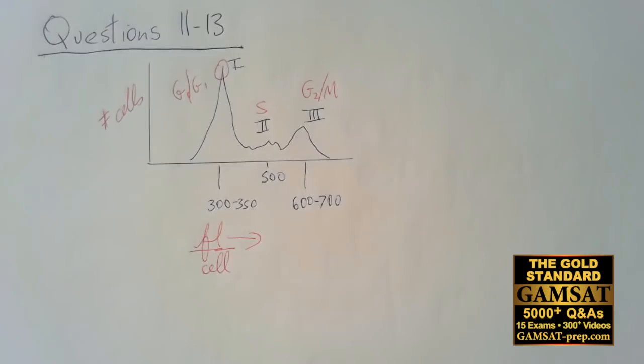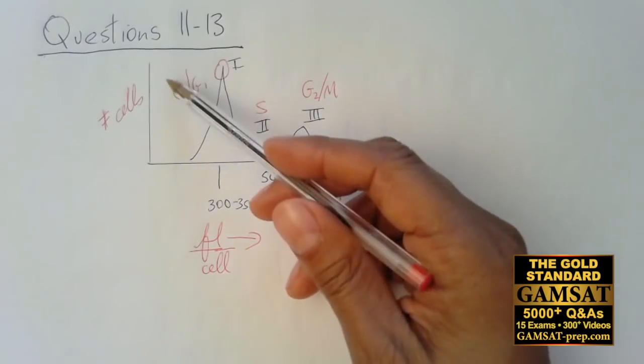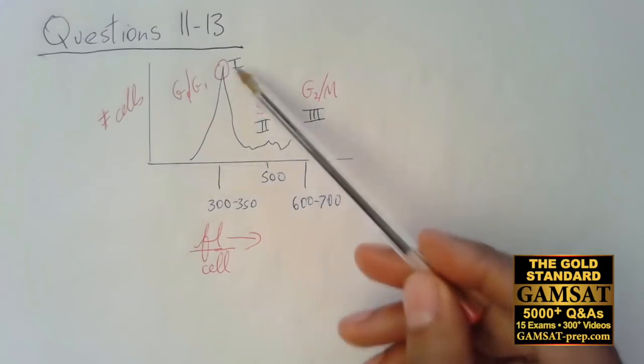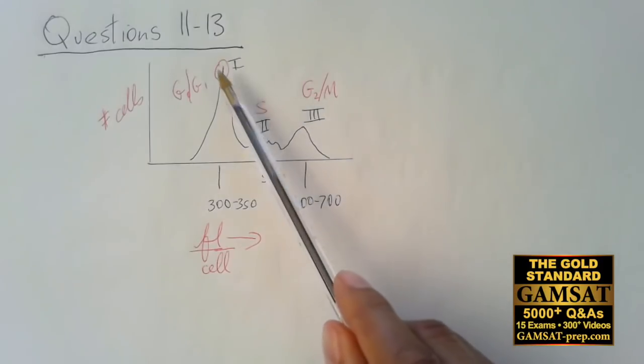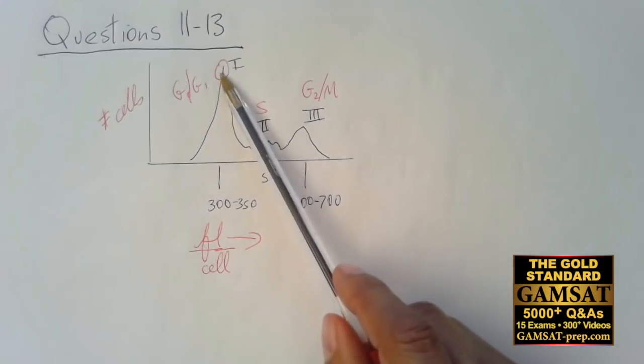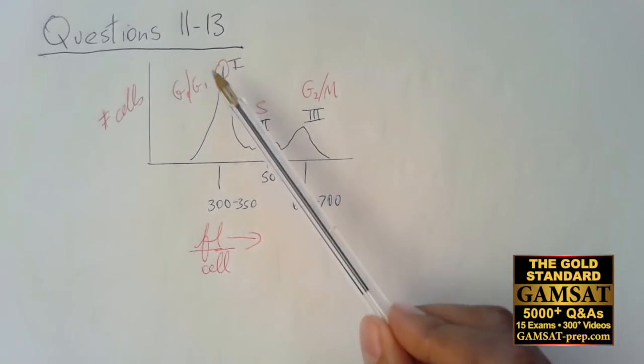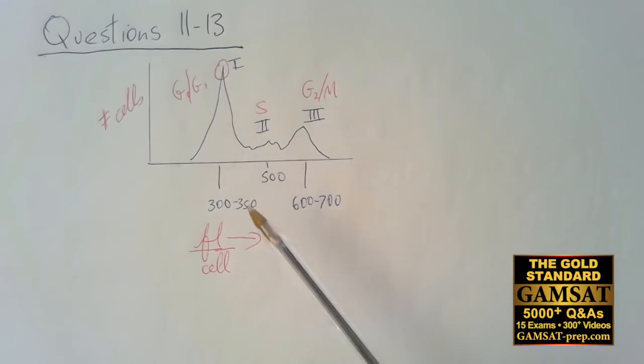Now we can look at question number 12. The height of the peak indicates number of cells. Let's not confuse that with fluorescence which is telling us about the amount of DNA in the cell. The height of peak one, Roman numeral one here, is going to be consistent with G0 or G1, either or. Those would have half the DNA, those would be most of the cells in the cell cycle, it's the longest part of the cell cycle. These are all good reasons for this having the most number of cells. Question 12, the answer is A.